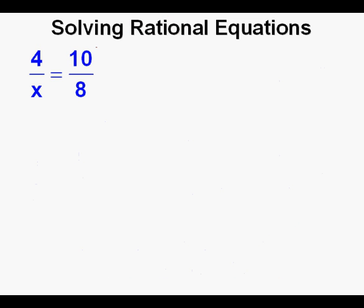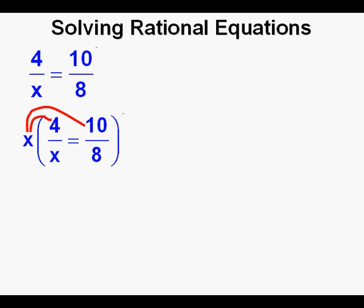This is the first problem we'll solve: 4 over x equals 10 over 8. Even using algebraic methods there are many ways to solve this one. The first thing we'll do is what we try to do in all these rational equations — that is, to get the unknown out of the denominator, in this case by multiplying both sides of the equation by x. We employ the distributive property and multiply x by all terms inside the parentheses. The x over x cancel each other in the first term, so what we have is 4 equals 10x over 8.